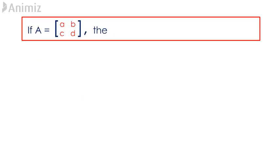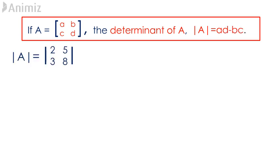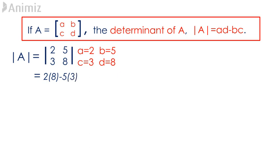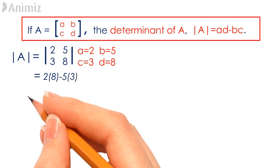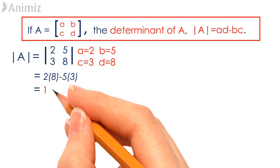In order to find the determinant of A, we proceed to finding the product of A and D minus the product of B and C. In this case, A is 2, B is 5, C is 3 and D is 8. AD minus BC gives us 2 times 8 minus 5 times 3, which gives us the value of the determinant of A to be 1.